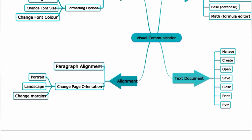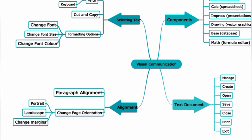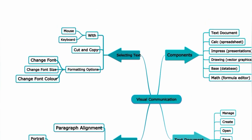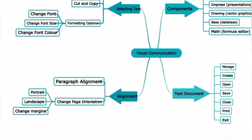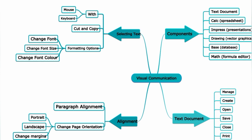This is the Visual Communication lesson mind map. Components covered: Writer (text document), Calc (spreadsheet), Impress (presentations), Drawing (vector graphics), Base (database), and Math Formula Editor. Text document management: create, open, save, close, print, exit. Selecting text with mouse and keyboard, formatting options, paragraph alignment, page orientation (portrait and landscape), and margin change. Overall Grade 7 Science lesson mind map — thank you for your support and thanks for watching.